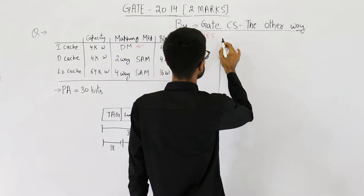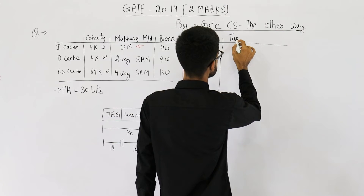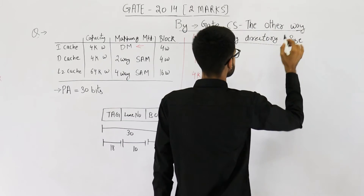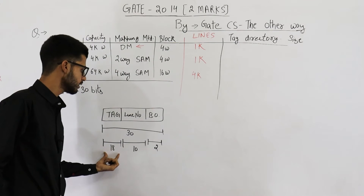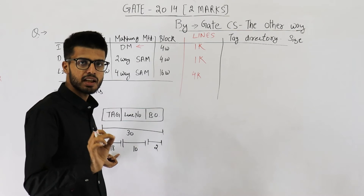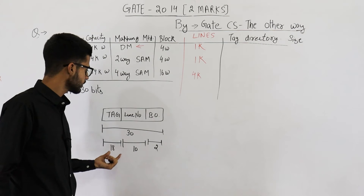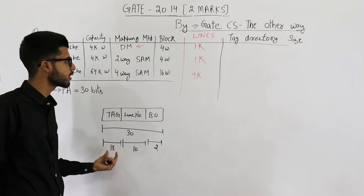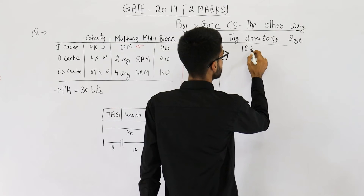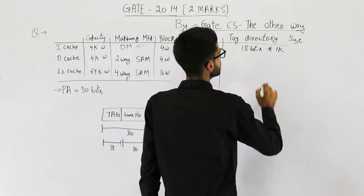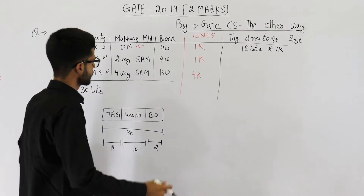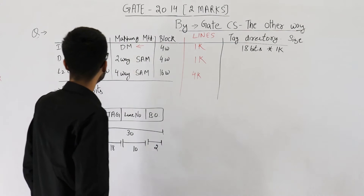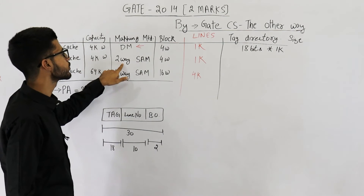The size of the tag directory = size of tag field × number of tags. Each line in cache has a tag, so the number of tags equals the number of lines = 2 raised to the power 10 = 1K. Each tag is 18 bits, so the total size of the tag directory for I-cache is 18 bits × 1K. The options in the question are given in this format.